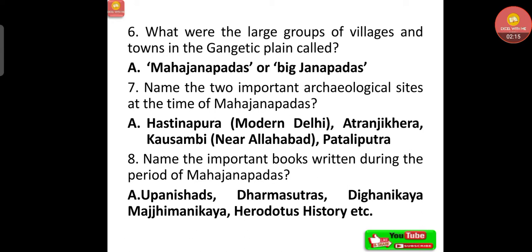The two important archaeological sites during the time of the Mahajanapadas were Hastinapura (near modern Delhi), Atranjikhera, Kausambi (near Allahabad), and Pataliputra. The important books written during the period of Mahajanapadas were the Upanishads, Dharma Sutras, Digha Nikaya, Majjhima Nikaya, and Herodotus' History.